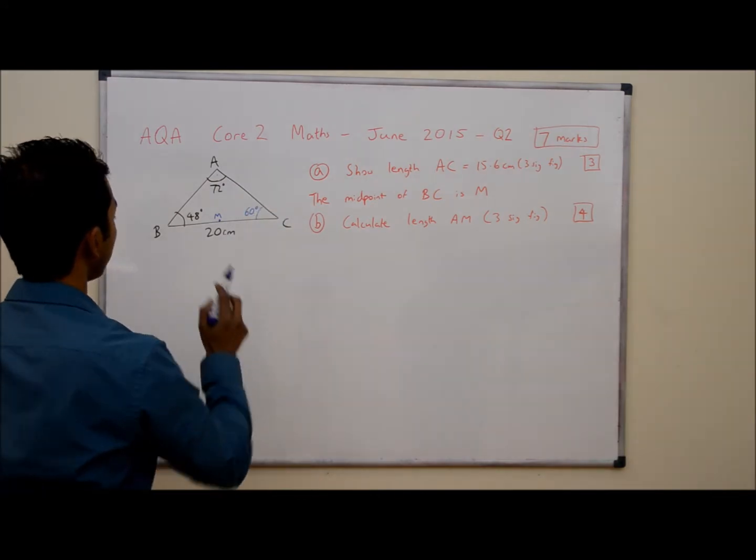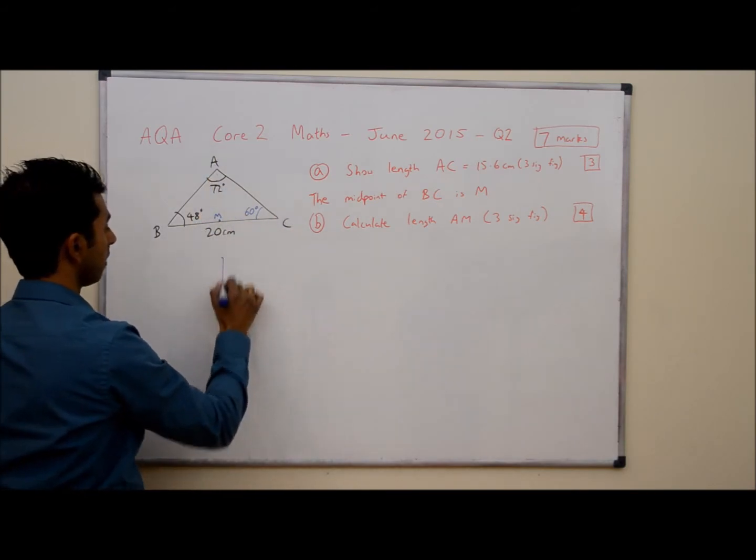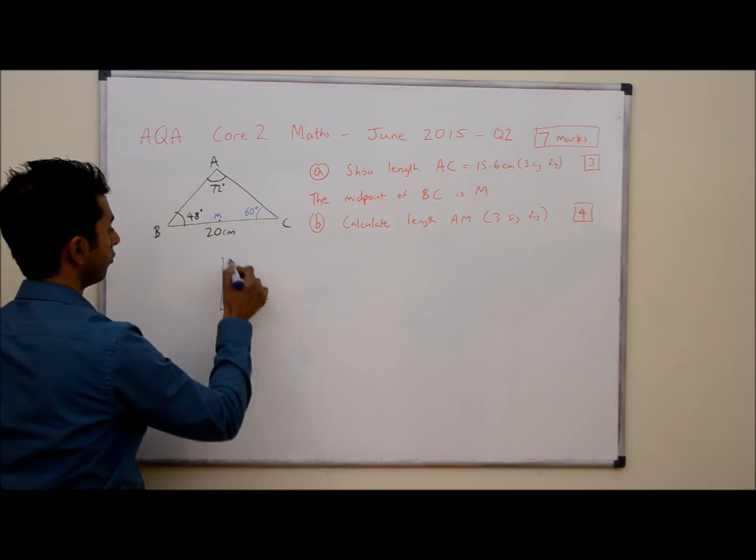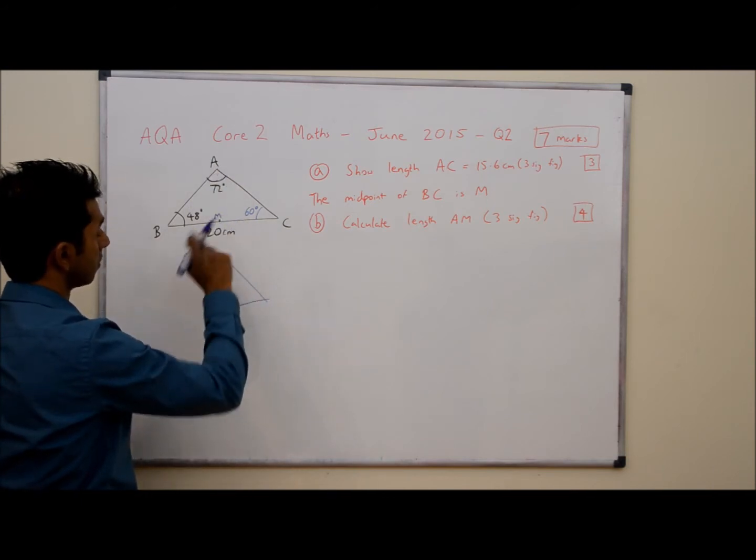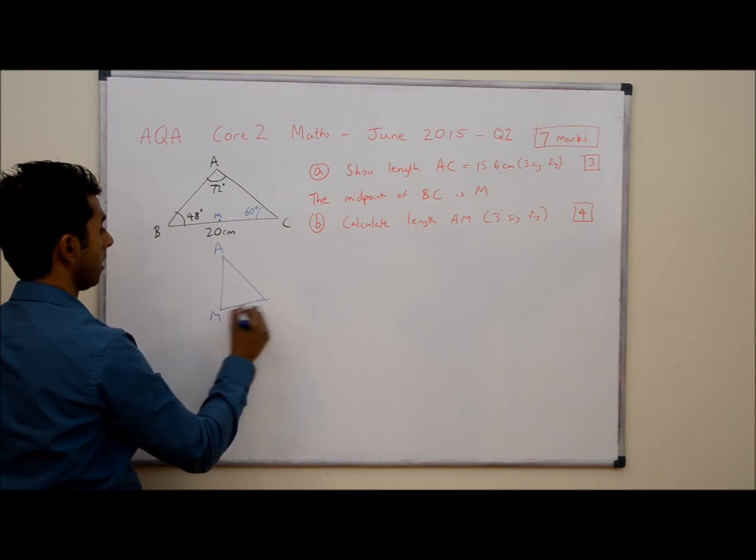So what I'm now going to draw is this triangle AMC. I'm deliberately not going to draw it like a right angle because it does look like a right angle here, but we're not certain. So AMC. We know this is 60 degrees.